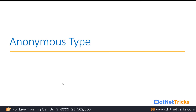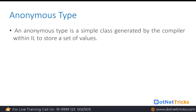Let's understand what is the anonymous type in C#. An anonymous type is a simple class generated by the compiler within the IL code to store a set of values. It is very useful when you're dealing with LINQ. When we write a LINQ query, we don't know about the exact return type of our queries, so that time we use the anonymous type.